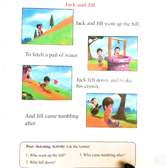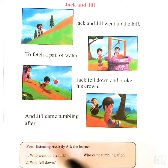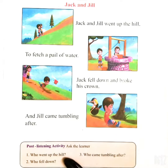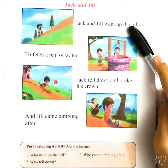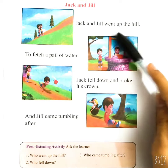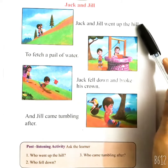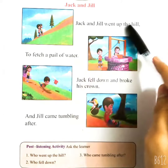Now, we will solve these questions. The first question is: who went up the hill? Students, the answer of this question is in the very first line of the poem. We read, Jack and Jill went up the hill. So, the answer of the question will be: Jack and Jill went up the hill.